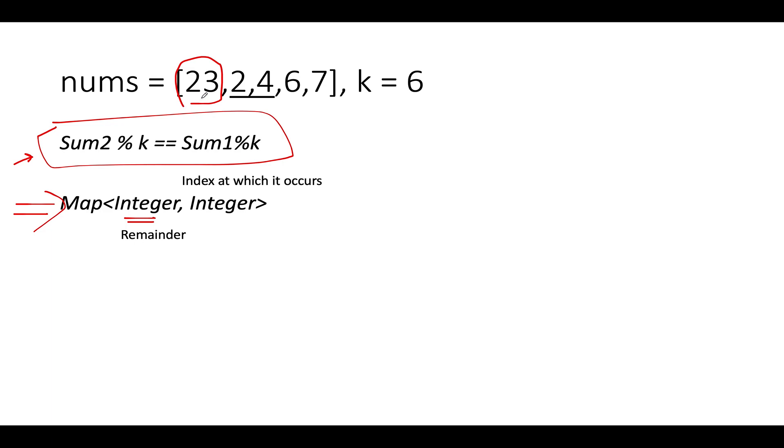So let's start the iteration. The first element that we have is 23. 23 modulus 6 what do you get? You get 5. So 5 is not part of this map ever. What I am going to do? I am going to make an addition for 5 that we have seen the remainder 5 at an index of 0.